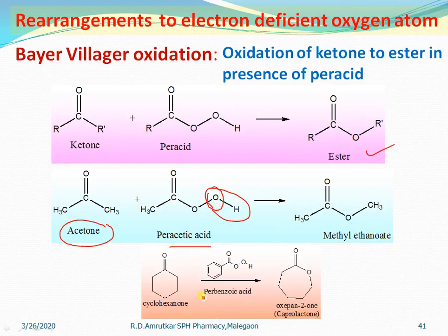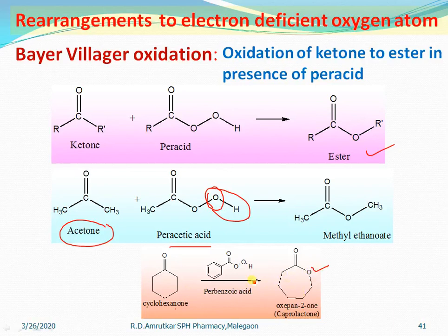Cyclic ketones are also converted into lactones with ring expansion. For example, when cyclohexanone is converted into oxepan-2-one, the 6-carbon ring becomes a 7-membered ring containing one oxygen atom. This is called ring expansion.